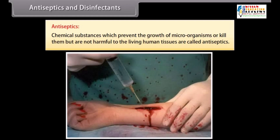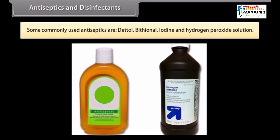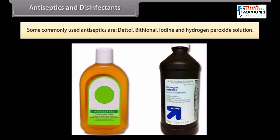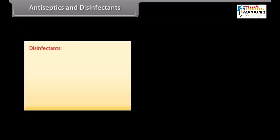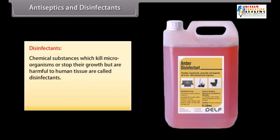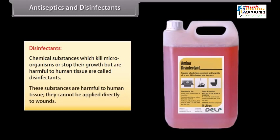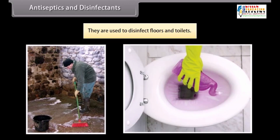Antiseptics: chemical substances which prevent the growth of microorganisms or kill them but are not harmful to living human tissues are called antiseptics. They are applied to living tissues, wounds, ulcers, and diseased skin surfaces. Some commonly used antiseptics are Dettol, bithionol, iodine, and hydrogen peroxide solution. Disinfectants: chemical substances which kill microorganisms or stop their growth but are harmful to human tissues are called disinfectants. They cannot be applied directly to wounds. They are used to disinfect floors and toilets. For example, phenol, sulfur dioxide, and chlorine.